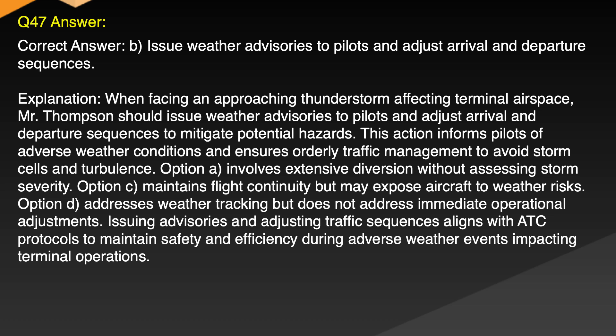Explanation: When facing an approaching thunderstorm affecting terminal airspace, Mr. Thompson should issue weather advisories to pilots and adjust arrival and departure sequences to mitigate potential hazards. This action informs pilots of adverse weather conditions and ensures orderly traffic management to avoid storm cells and turbulence. Option A involves extensive diversion without assessing storm severity. Option C maintains flight continuity but may expose aircraft to weather risks. Option D addresses weather tracking but does not address immediate operational adjustments. Issuing advisories and adjusting traffic sequences aligns with ATC protocols to maintain safety and efficiency during adverse weather events impacting terminal operations.